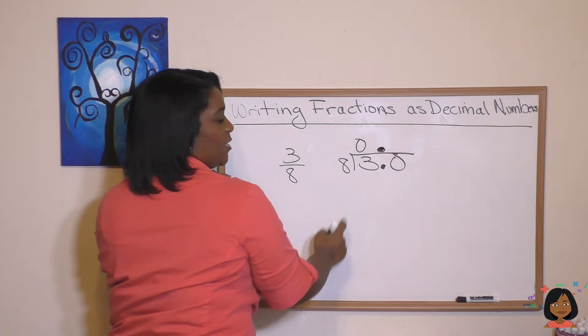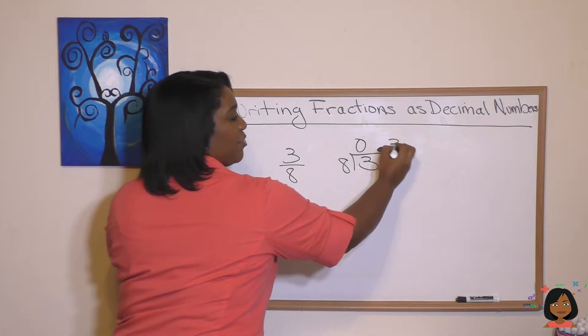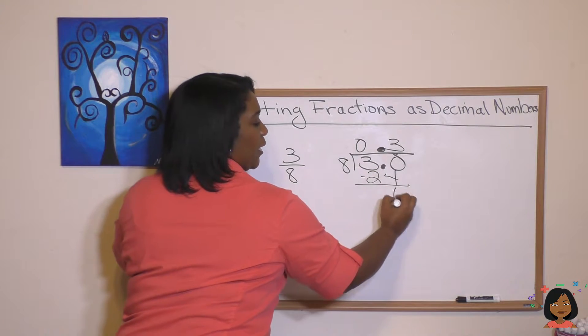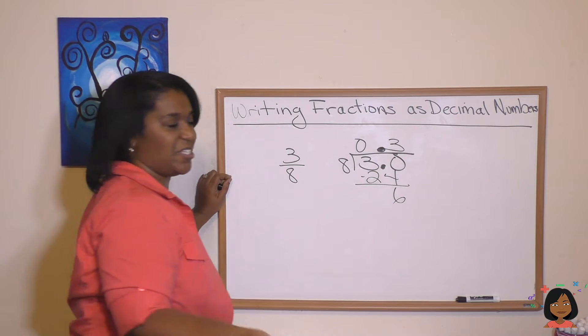8 goes into 3, 0 times. 8 goes into 30, 3 times. That's 24. And we have a 6. So I'm going to add another 0 and keep going.